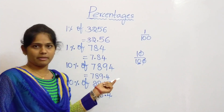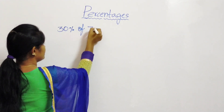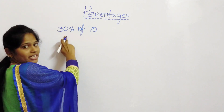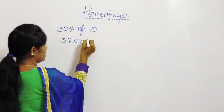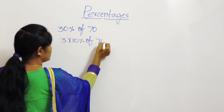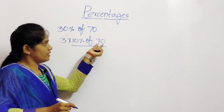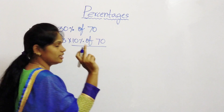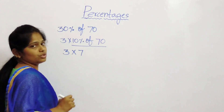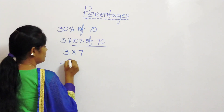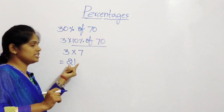Let us take some more examples. This is 30 percentage of 70. This 30 percentage we can write as 3 into 10 percentage of 70. 10 percentage of 70 means after 1 digit, we have to put the decimal, so it becomes 7.0, that means 7. So 3 into 7 equals 21. So the resulting value of 30 percentage of 70 is 21.